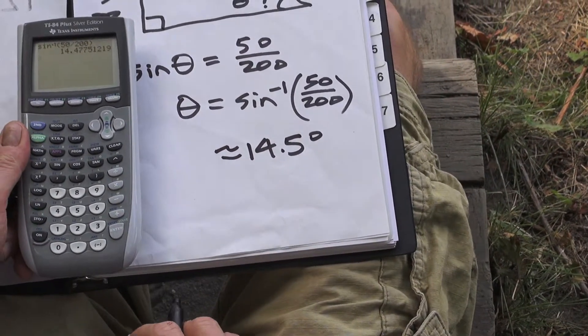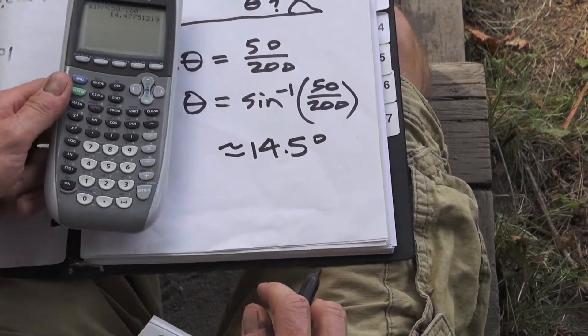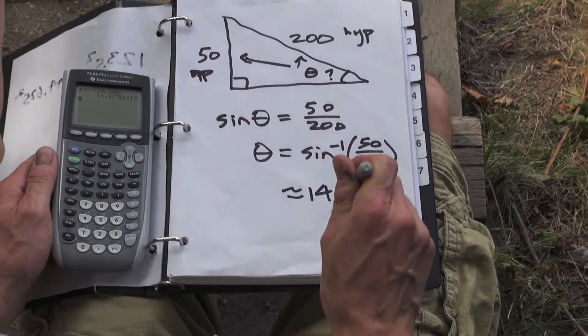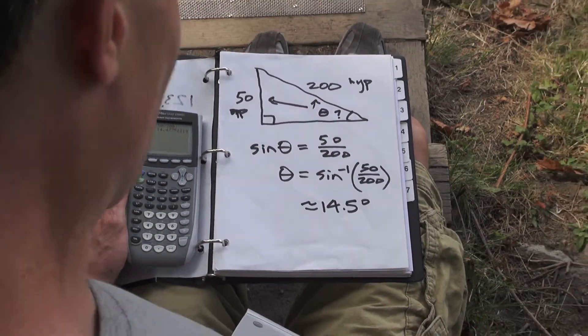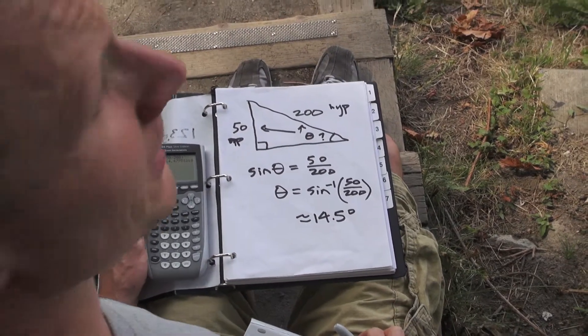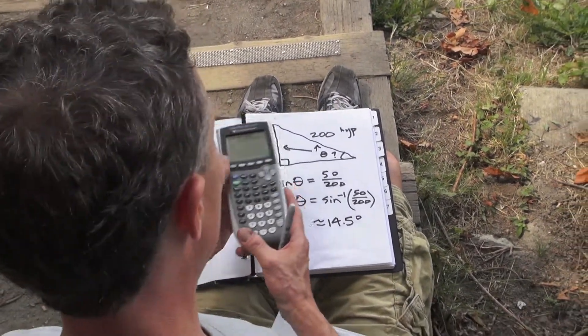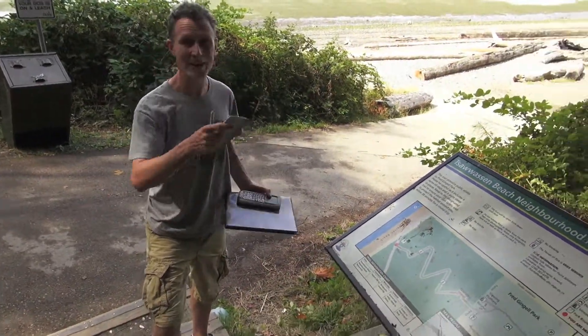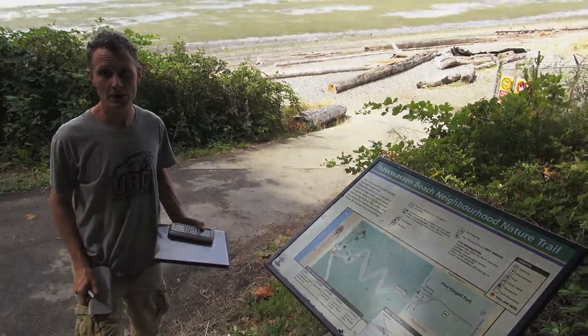And that is our angle, roughly speaking. So that's a pretty steep angle for a trail—that's probably more than you want to drive in a car, I'm guessing. But it's a good workout here, as you can see people running by. That's using trigonometry to find an angle when you know two of the sides.